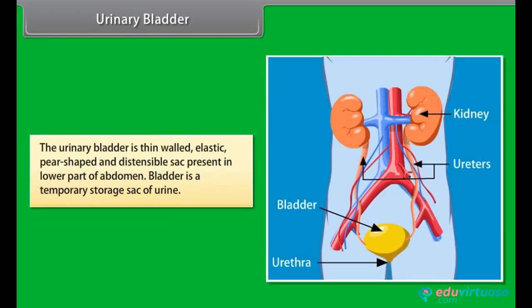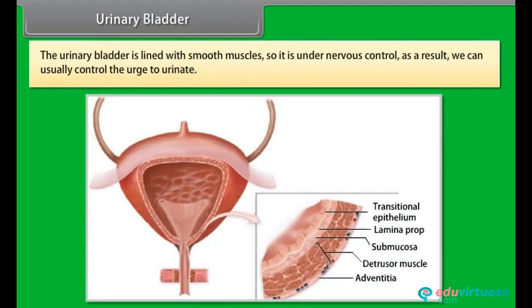The urinary bladder is a thin-walled, elastic, pear-shaped, and distensible sack present in the lower part of the abdomen. It is a temporary storage sack of urine. The urinary bladder is lined with smooth muscles, so it is under nervous control. As a result, we can usually control the urge to urinate.